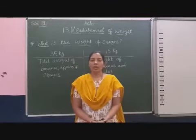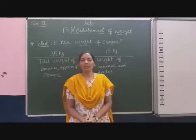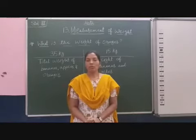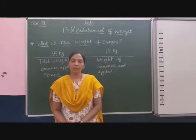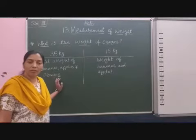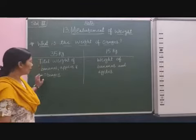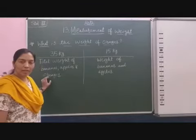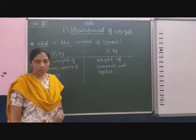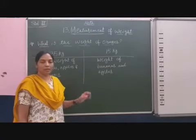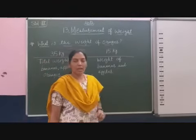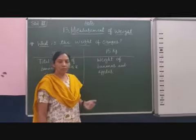Now I want to introduce the subtraction of weight. In your textbook, one example is given about fruits — the total weight of three fruits is given: the total weight of bananas, apples, and oranges is 35 kg. On the other hand, we know the weight of bananas and apples, which is 15 kg.